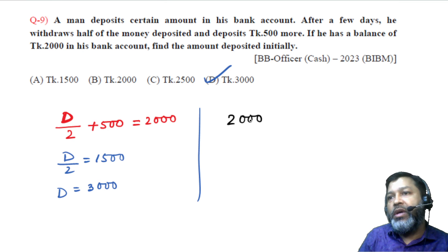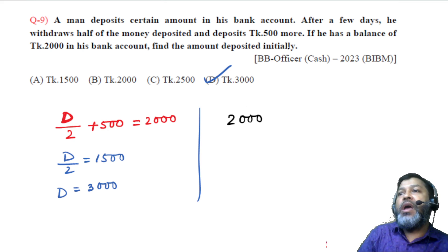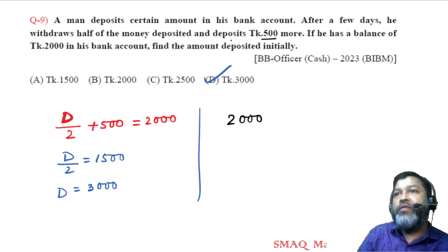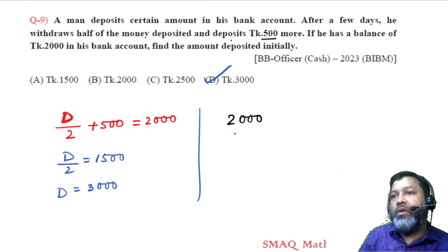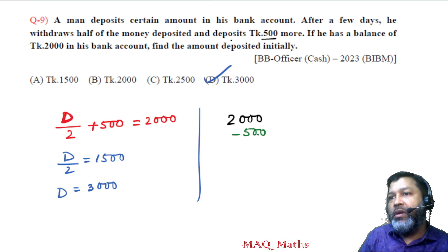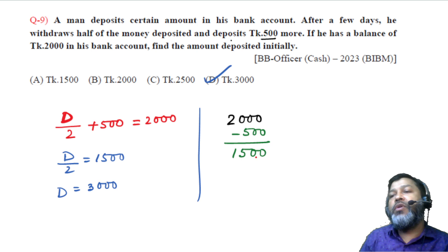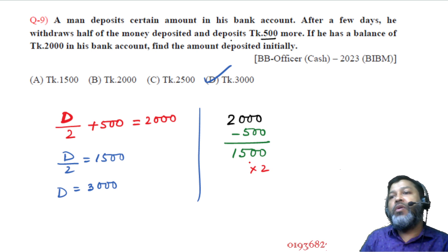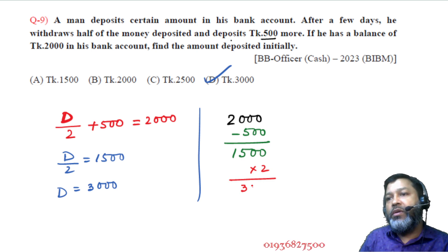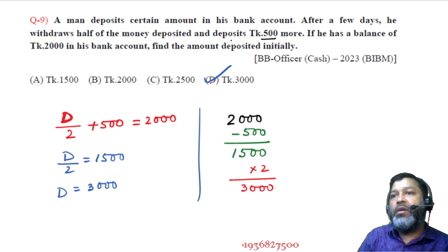Solving: D/2 equals 2000 minus 500 equals 1500, so D equals 3000. The initial deposit is taka 3000, option A. Verification working backwards: starting from 2000, removing the 500 deposit gives 1500, and doubling gives 3000.